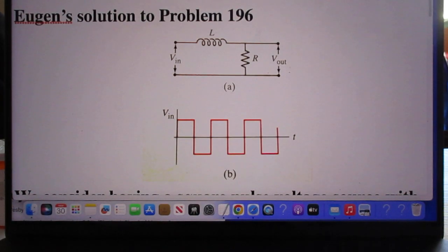Hello, hello, hello. Today is Sunday, March 31st, 2024. Yesterday I already published Keith Norman's solution to problem 196. I will now post Eugen's solution to that problem.